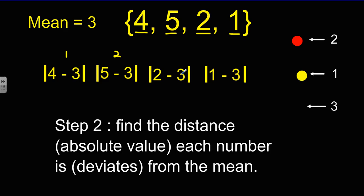Now, 2 minus 3. We get a negative 1. But the absolute value of negative 1 is a positive 1. And finally, 1 minus 3 is negative 2. But again, the absolute value of negative 2 is going to give us a positive value of 2.